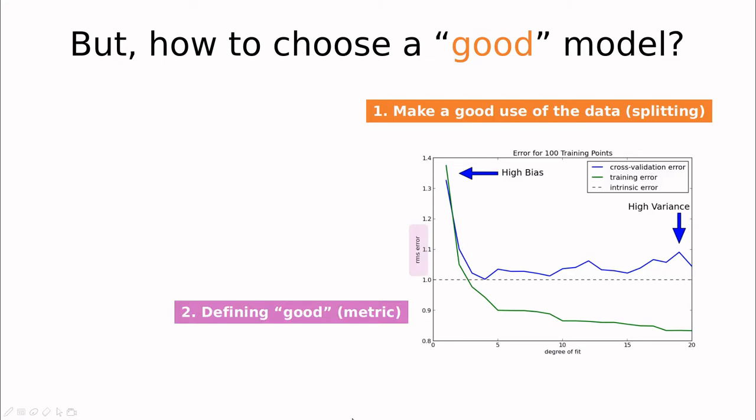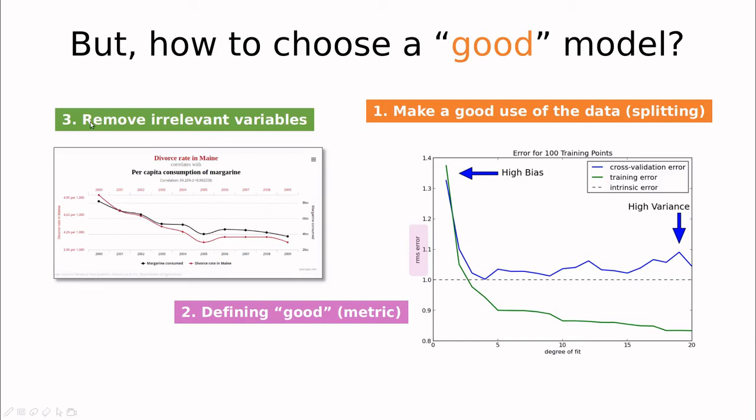The second idea is defining a good metric. So in the case of linear regression, we are playing with root mean square error. But we can have different metrics and different metrics penalized for different number of parameters. And the third idea is try to remove irrelevant variables. And remember that correlations can be dangerous. And sometimes high correlation doesn't mean that there is some causal influence between variables there.